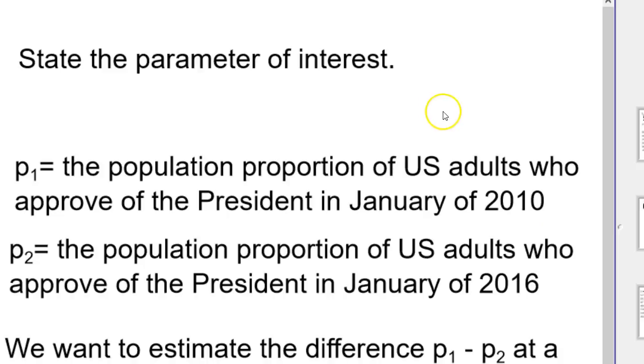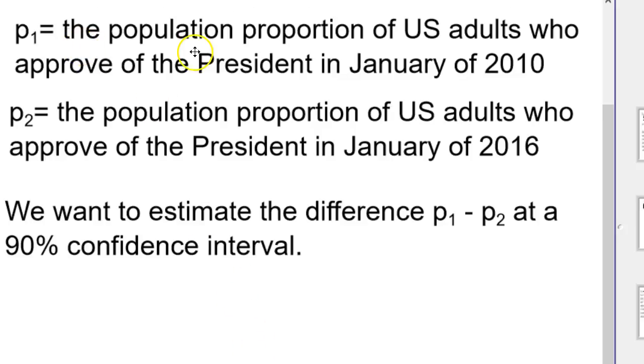So first off, we're going to go ahead and state the parameters of interest. P1 is the population proportion of U.S. adults who approved of the President in January of 2010. P2 is the population proportion of U.S. adults who approved of the President in January of 2016. We want to estimate the difference, P1 minus P2, at a 90% confidence interval.